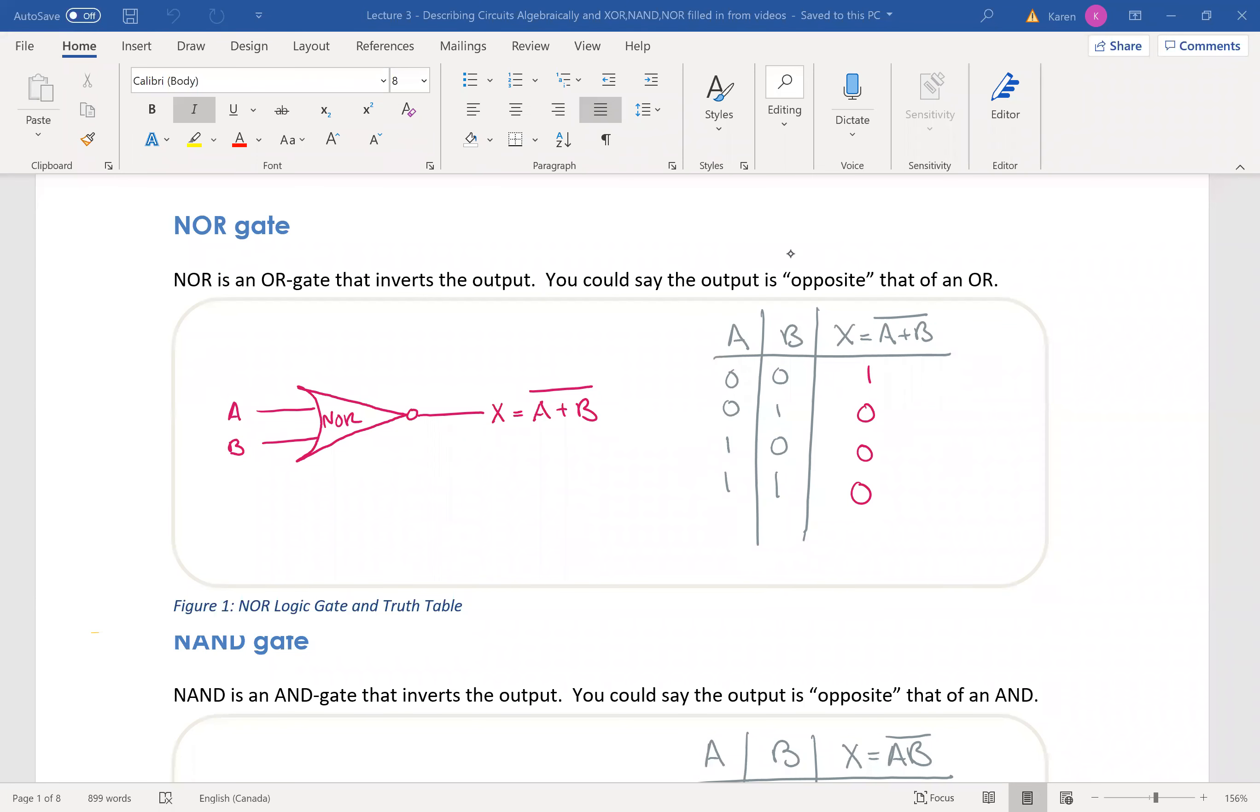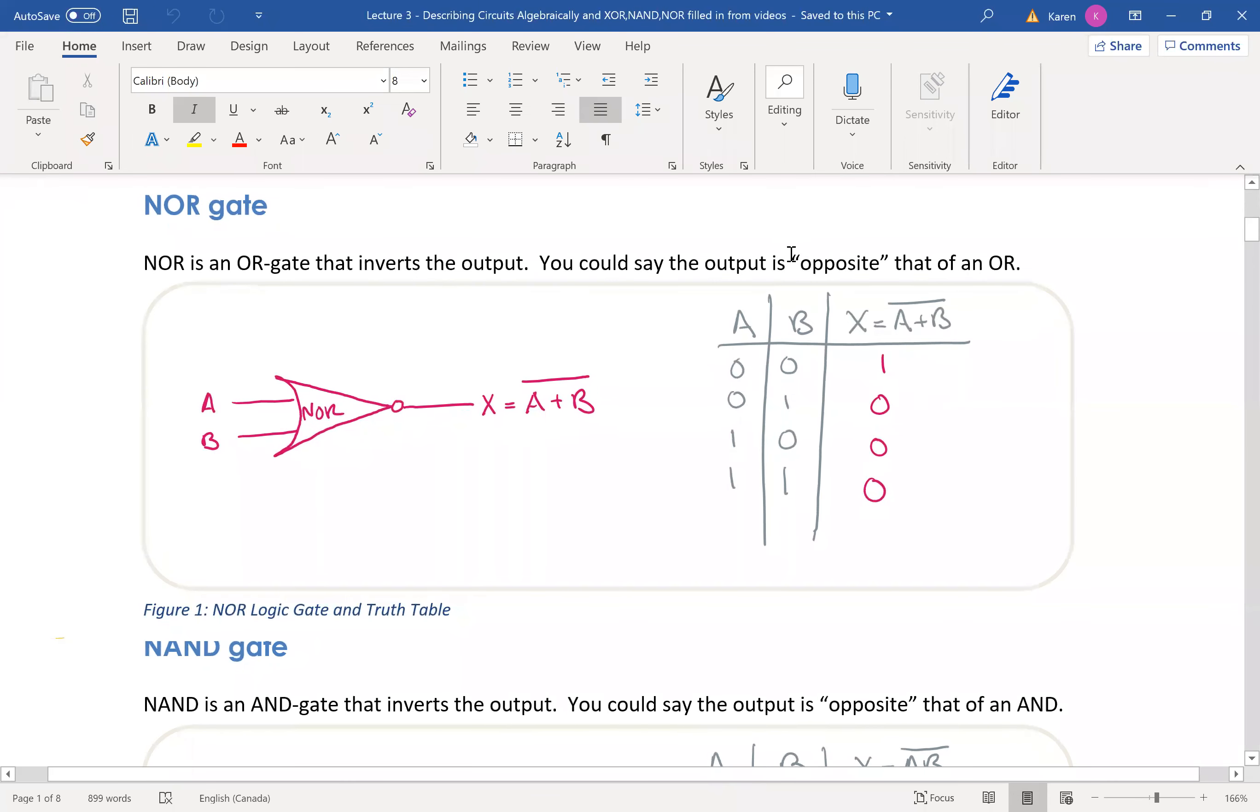We know that there are only three basic gates: the AND, OR, and NOT gates. Everything else can be made out of the AND, OR, and NOT gates. But we have a few more gates.